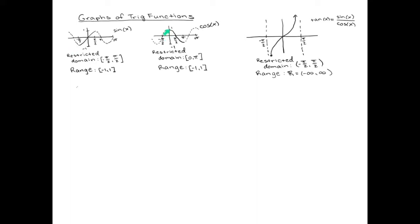Same thing with the cosine. If we go from 0 to pi, we'll get the whole length of the cosine, and then the rest of the cosine we can just throw away. The tangent function satisfies the horizontal line test in between negative pi over 2 and pi over 2, so that'll be our restricted domain for tangent.